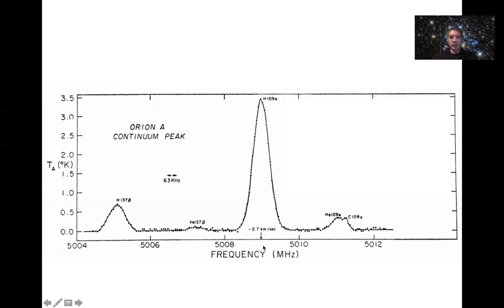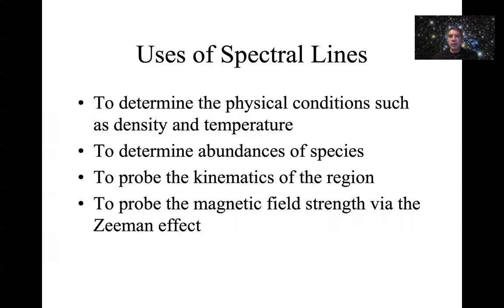The frequency here is up at about five gigahertz. What can we use spectral lines for? They can often give us additional or even better constraints on the physical conditions in the emission region. We've already used continuum radiation to determine densities and temperatures of emitting gas, but spectral lines can do that in a better, different, or independent way to provide more information.